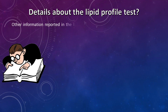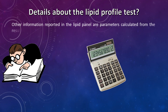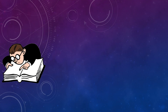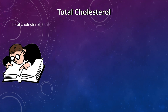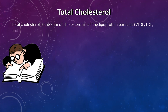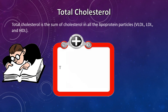Other information reported in the lipid panel includes parameters calculated from the test results listed above. Total cholesterol (TC) is the sum of cholesterol in all lipoprotein particles — VLDL, LDL, and HDL. The formula is: TC = LDL-C + HDL-C + VLDL-C.